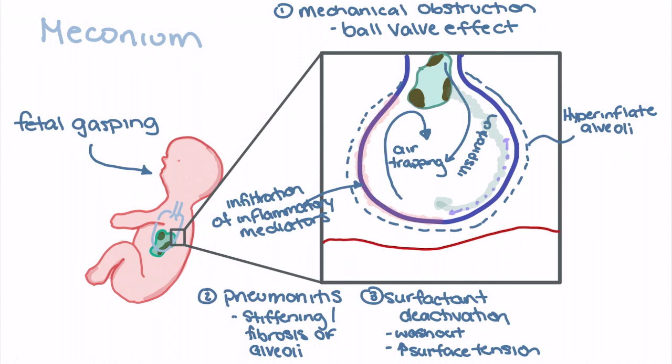One of the more pathological features of meconium aspiration is pulmonary hypertension. As the neonate inhales meconium, meconium has vasoactive principles which lead to pulmonary hypertension or vasoconstriction of the pulmonary arteries.